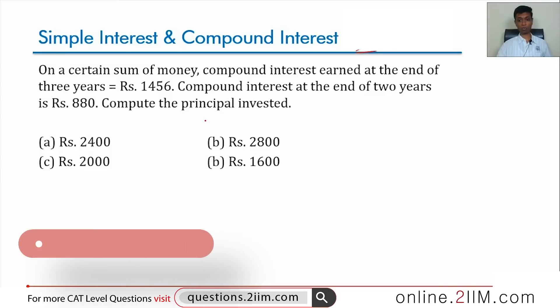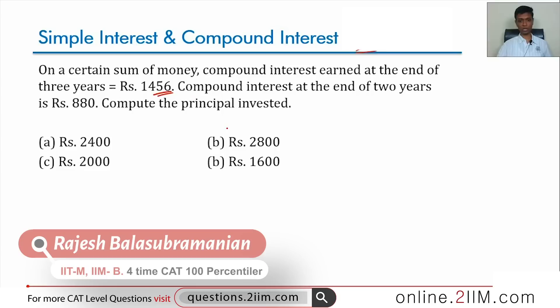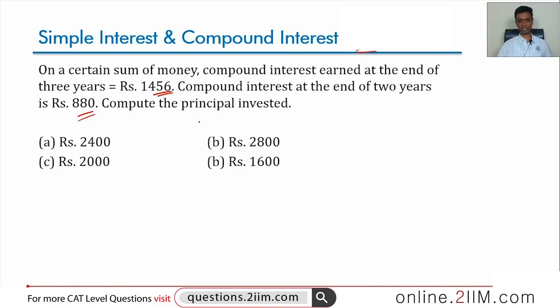On a certain sum of money, compound interest earned at the end of 3 years is 1456, compound interest at the end of 2 years is Rs. 880. Compute the principal invested.